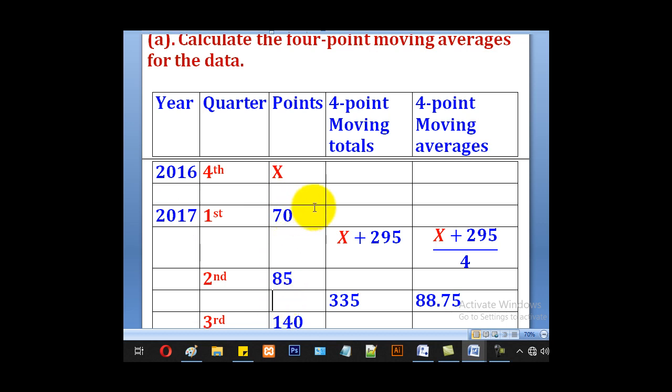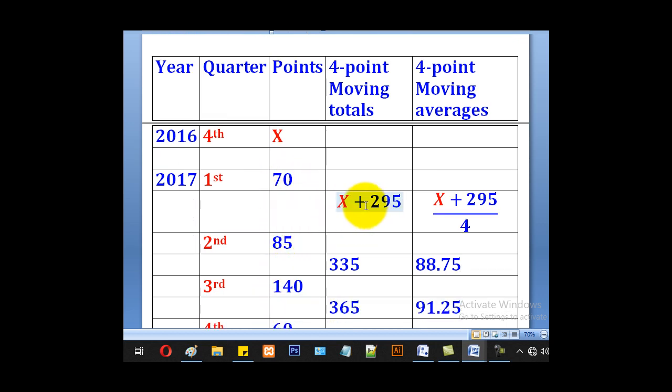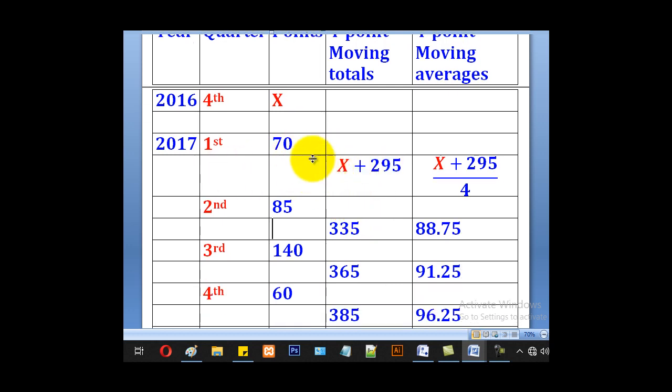Now for the 4 point, unlike the 3 point, the moving averages will be in between 2 values. The next moving average, 4 point moving total will be, leave this one and add 1, 2, 3, 4.